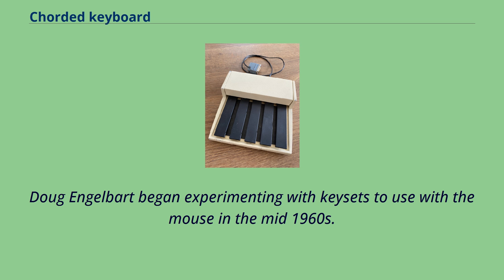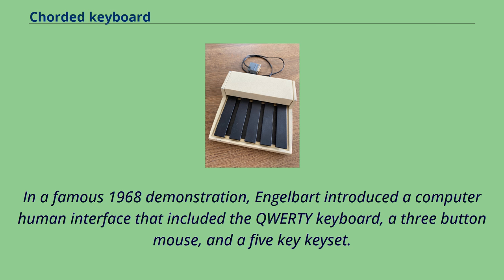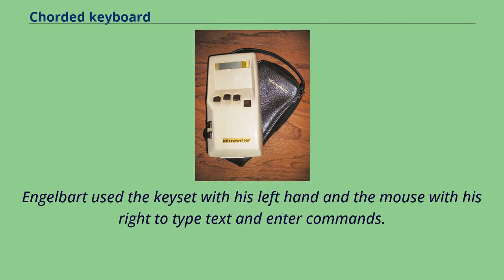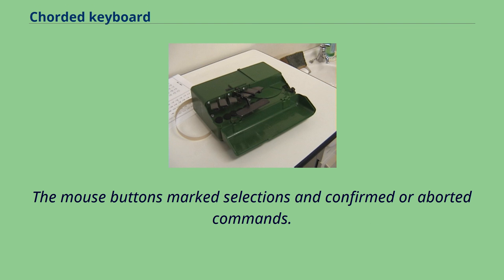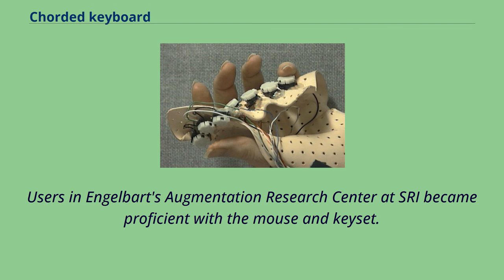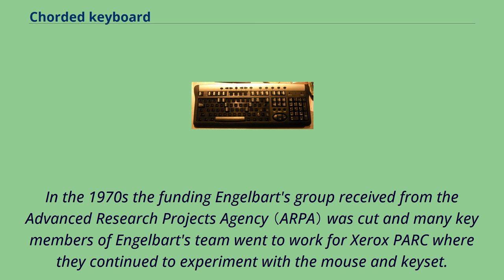Doug Engelbart began experimenting with keysets to use with the mouse in the mid-1960s. In a famous 1968 demonstration, Engelbart introduced a computer-human interface that included the QWERTY keyboard, a three-button mouse, and a five-key keyset. He used the keyset with his left hand and the mouse with his right to type text and enter commands, while mouse buttons marked selections and confirmed or aborted commands. Users in Engelbart's Augmentation Research Center at SRI became proficient with the mouse and keyset. In the 1970s, funding was cut and many key members of Engelbart's team went to Xerox PARC, where they continued to experiment with the mouse and keyset.